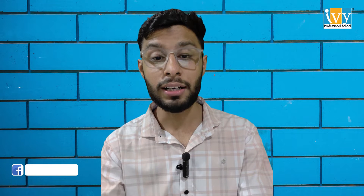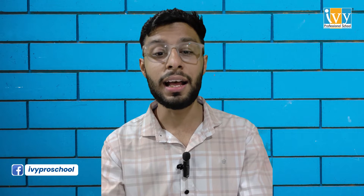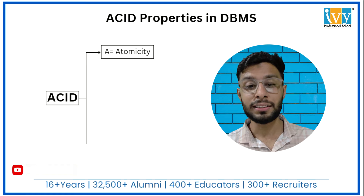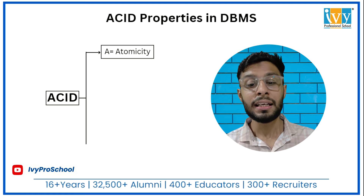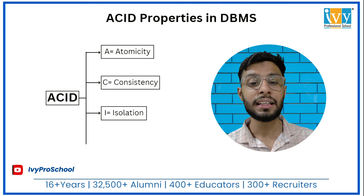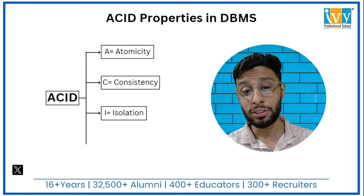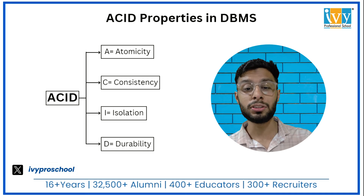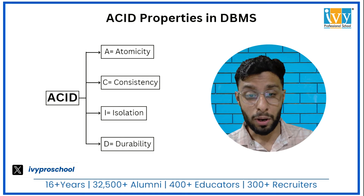Hello everyone, welcome back to Tywin's YouTube channel. Today we are going to talk about what are the ACID properties. A stands for Atomicity, C stands for Consistency, I stands for Isolation, and D stands for Durability.